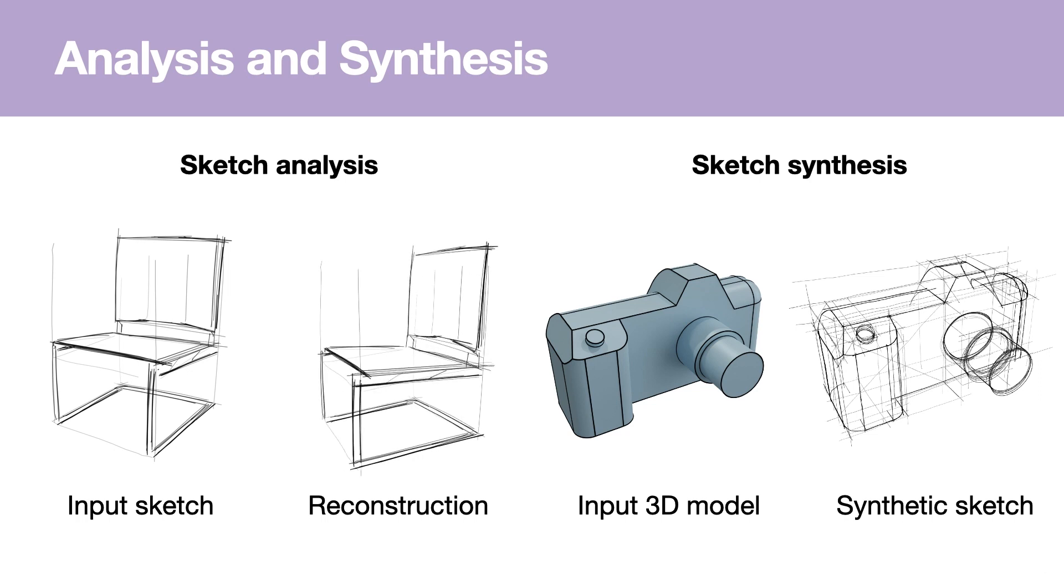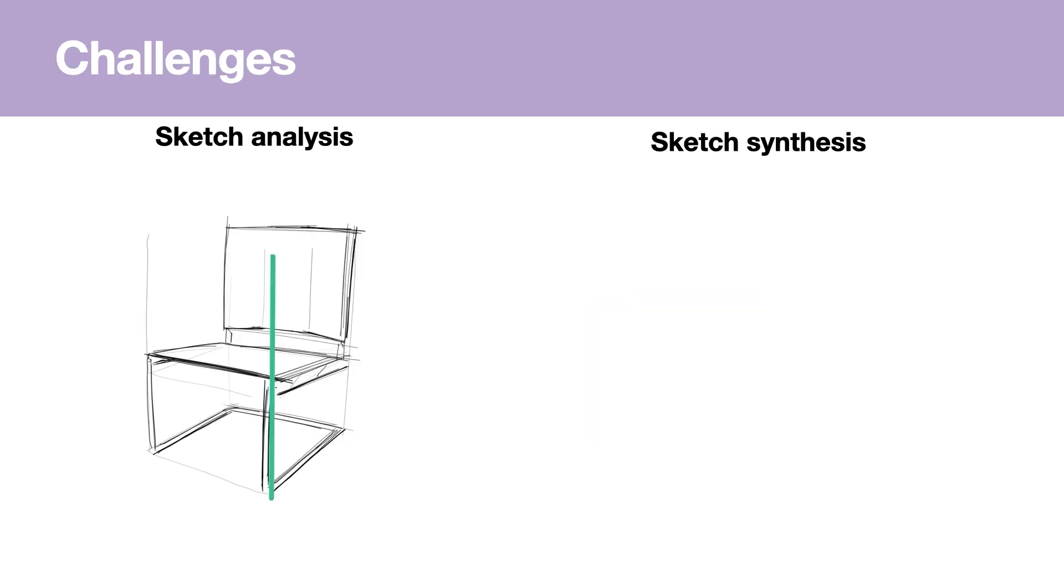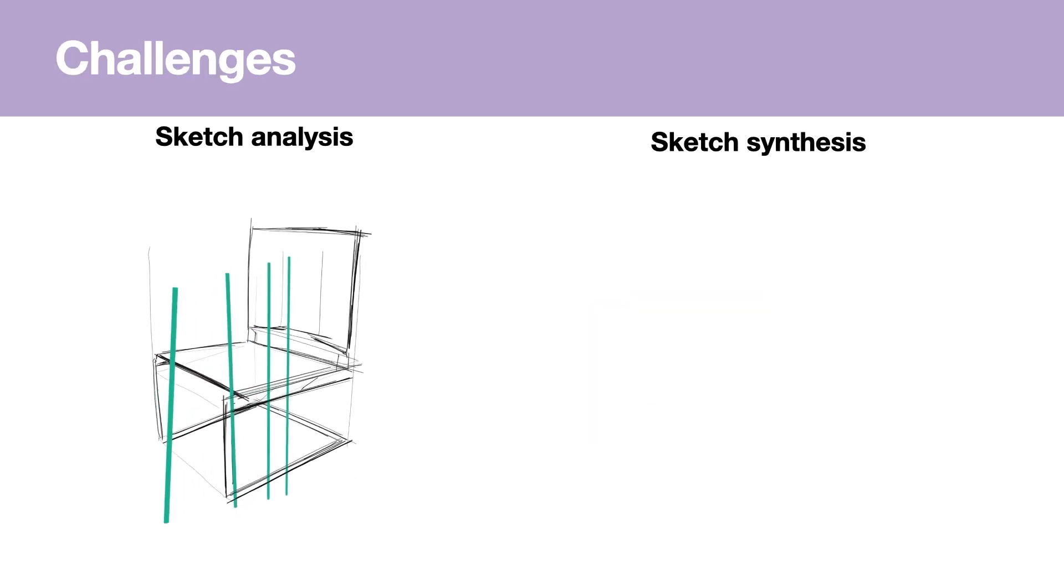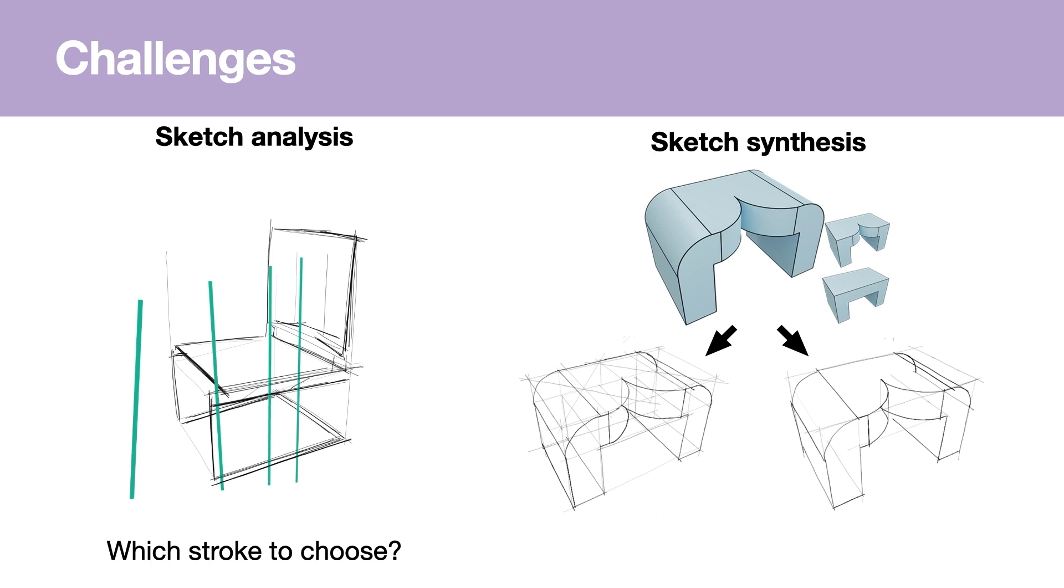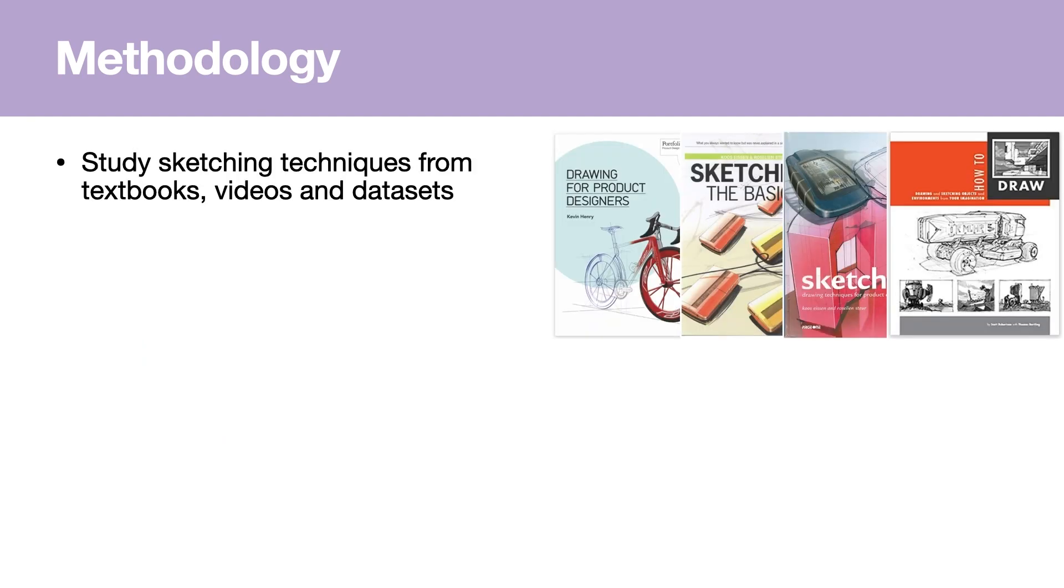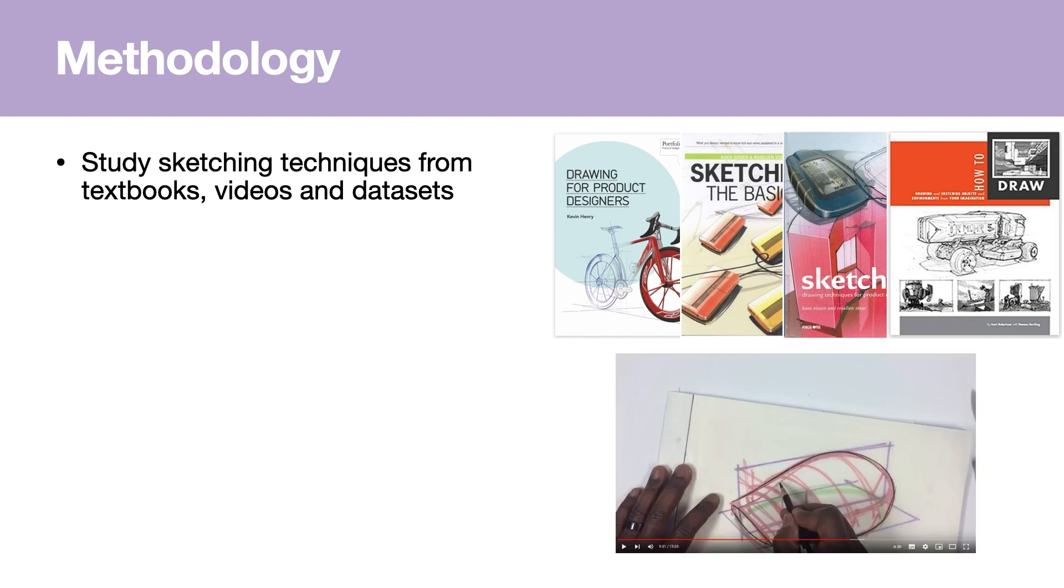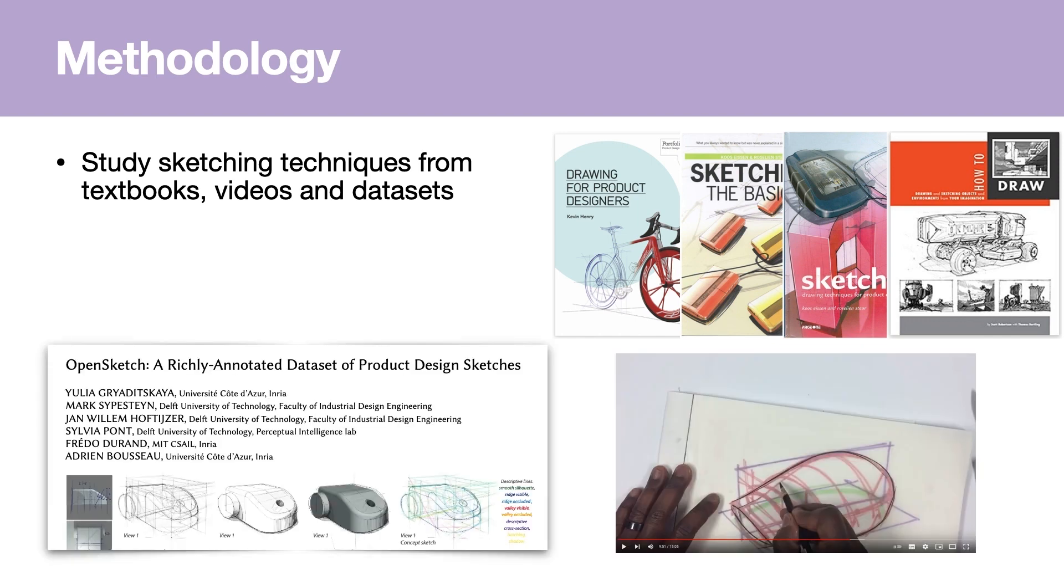Both analysis and synthesis are challenging. The reconstruction of 2D sketches into 3D is under-constrained, since the 2D stroke can have multiple valid 3D interpretations. The synthesis of concept sketches is also challenging, since we can obtain several valid sketches for the same 3D model. To overcome these under-constrained problems, we studied how professional designers use efficient sketching techniques to construct 3D shapes in perspective. We distilled our observations from textbooks, videos, and sketch datasets into design principles which lay the foundation of our algorithms.